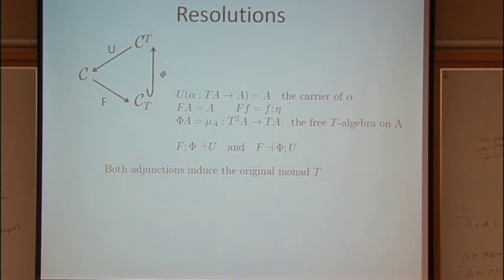So the relationship between all those three categories, and I'll stop once I've explained this. We've now got the base category that we started with, C. We've got this Kleisli category, CT, which has the same objects but these Kleisli maps, and then we've got the Eilenberg-Moore category, C sup T, which has these T algebras and T algebra homomorphisms as objects.